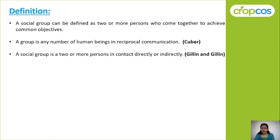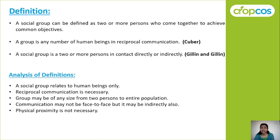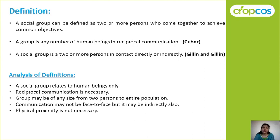After an analysis of these definitions, we can say: social group is related to human beings. Reciprocal communication is necessary — two-way communication must be present. A group may be of any size — even two people can form a group, and more than two people also form a group.